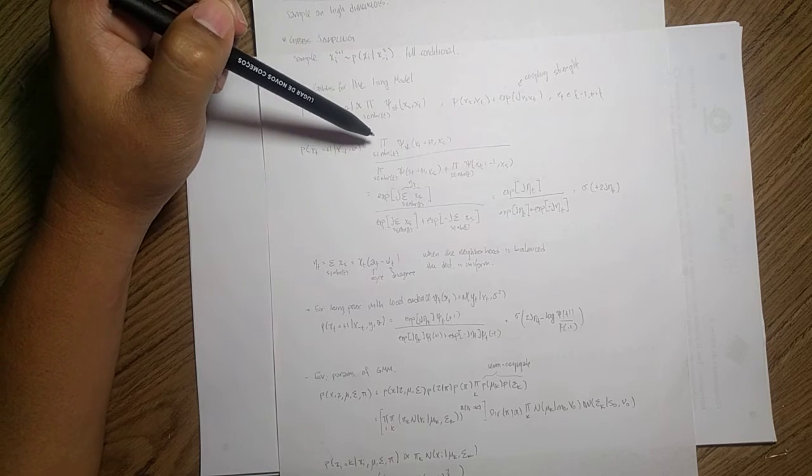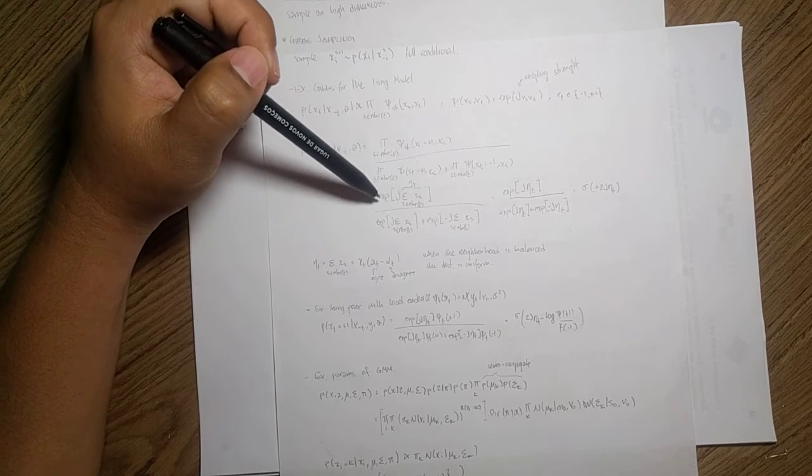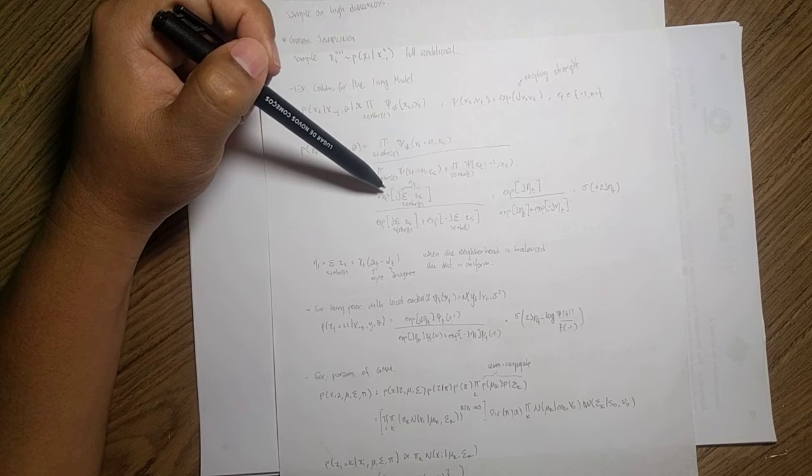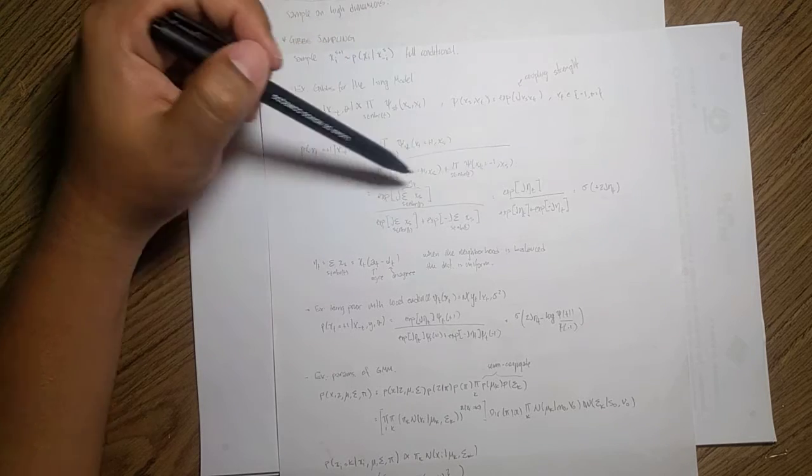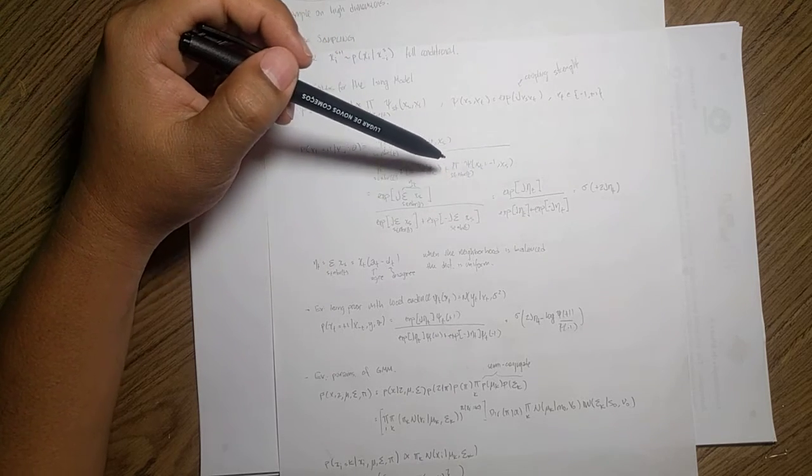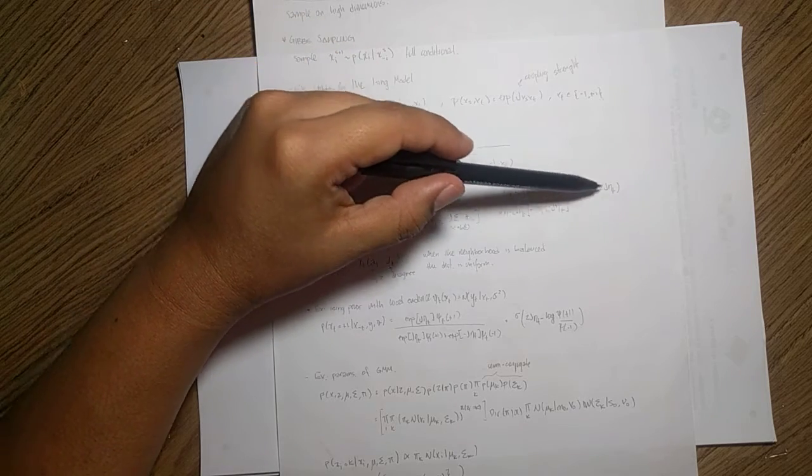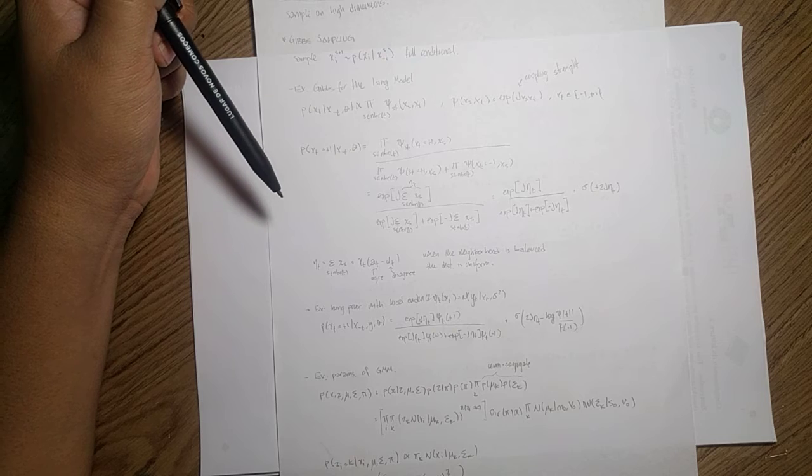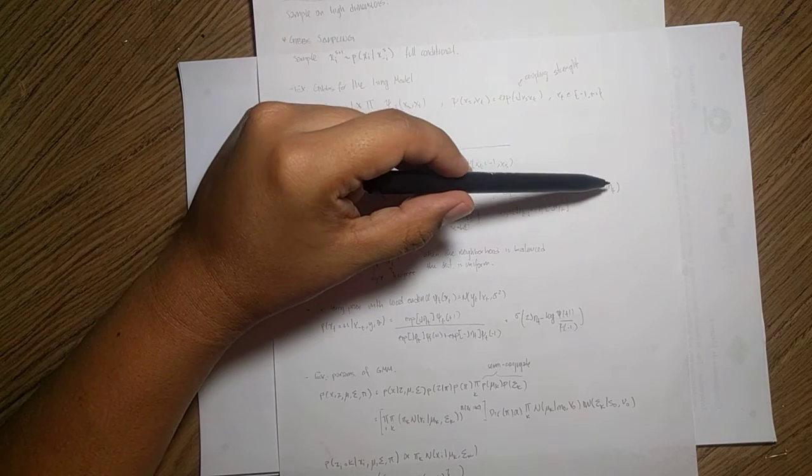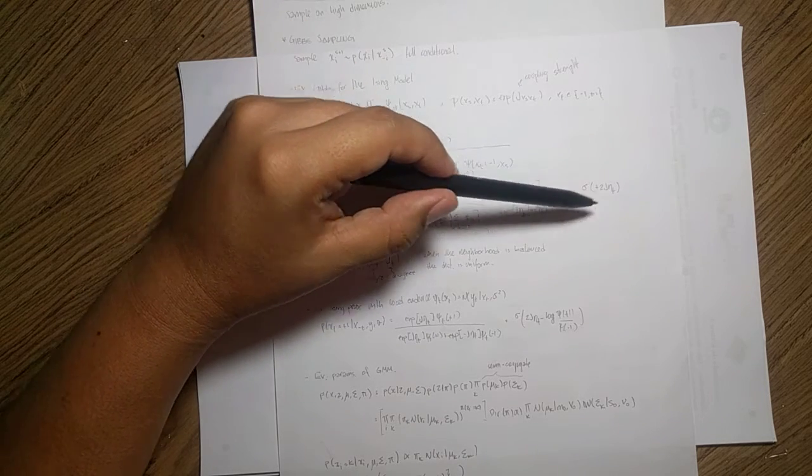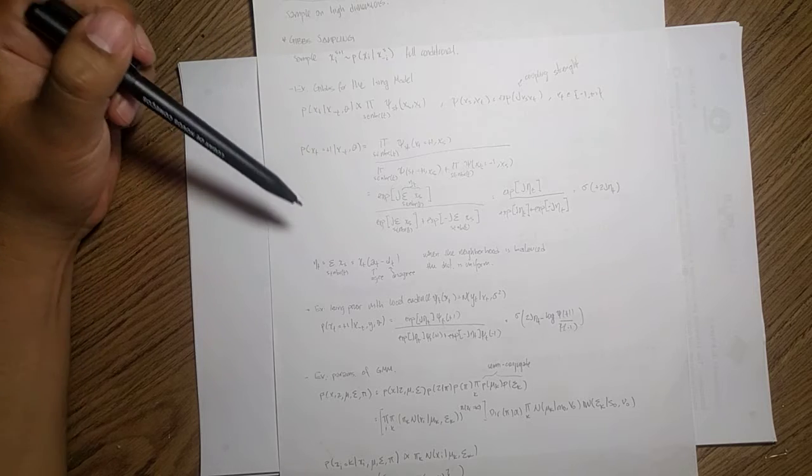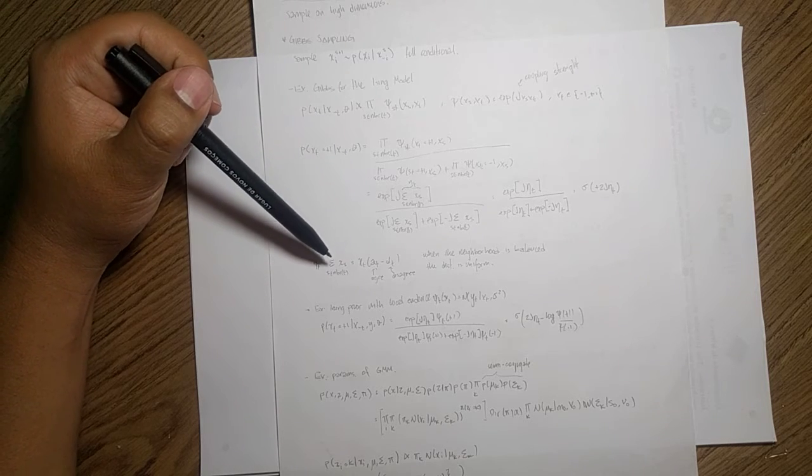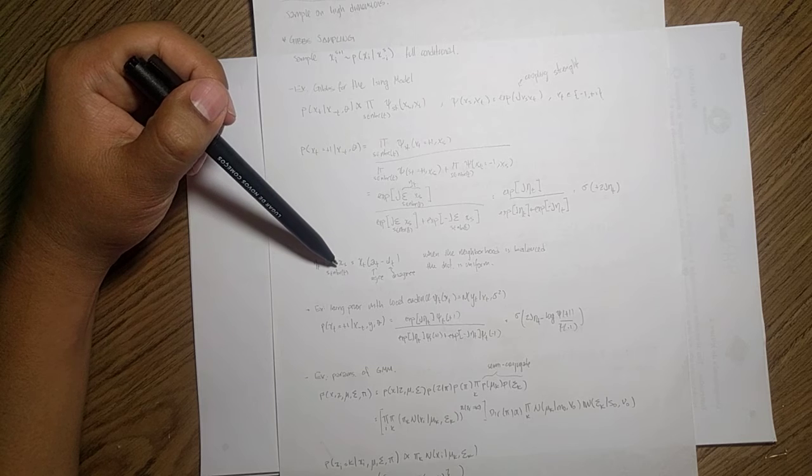So if you solve this, then you just end up with these exponentials with respect of eta here. And it just has sigmoid. Now the thing here is that this eta t that defines the sigmoid that we will be using, it depends on the summation of the values in the neighborhood.